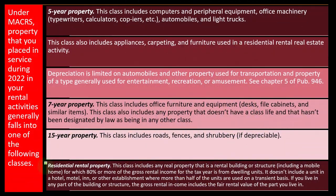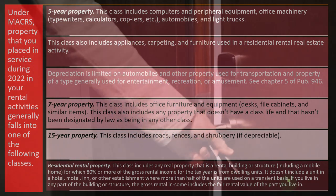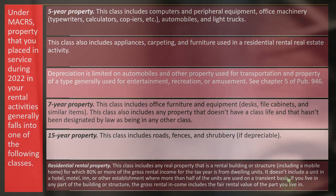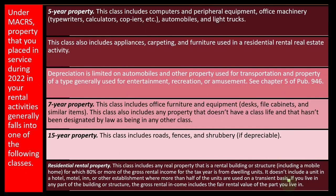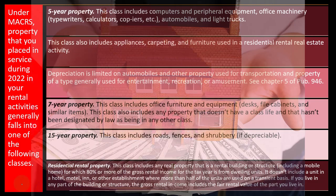You get into the weeds a bit distinguishing whether a property is more like a motel or hotel — which might be subject to self-employment tax — versus rental property where you're not providing substantial services, which is more passive in nature. If you live in any part of the building or structure, the gross rental income includes the fair rental value of the part you live in.